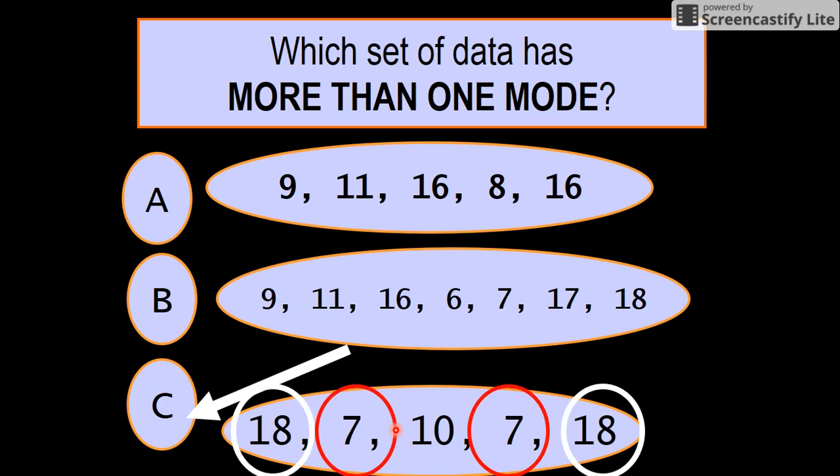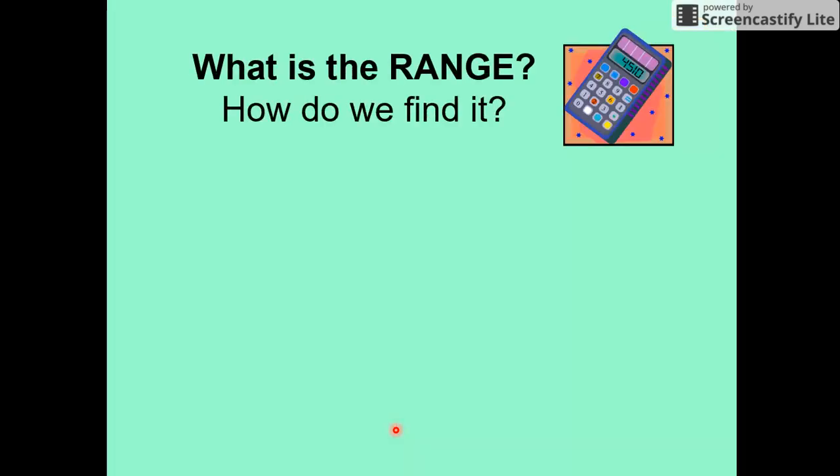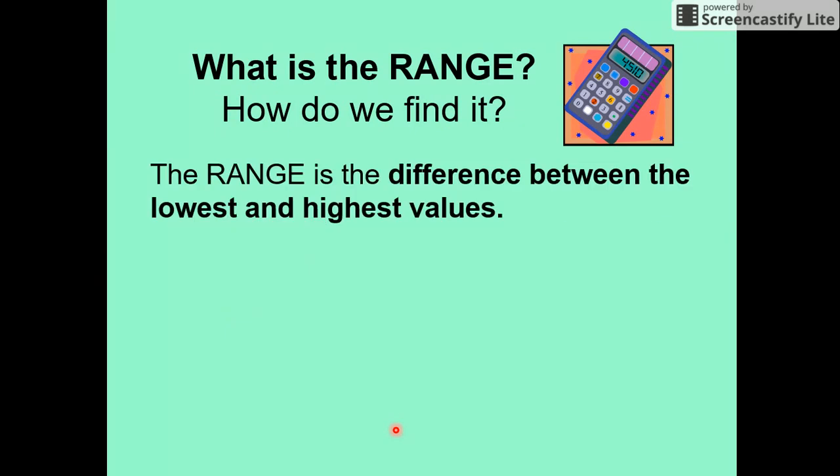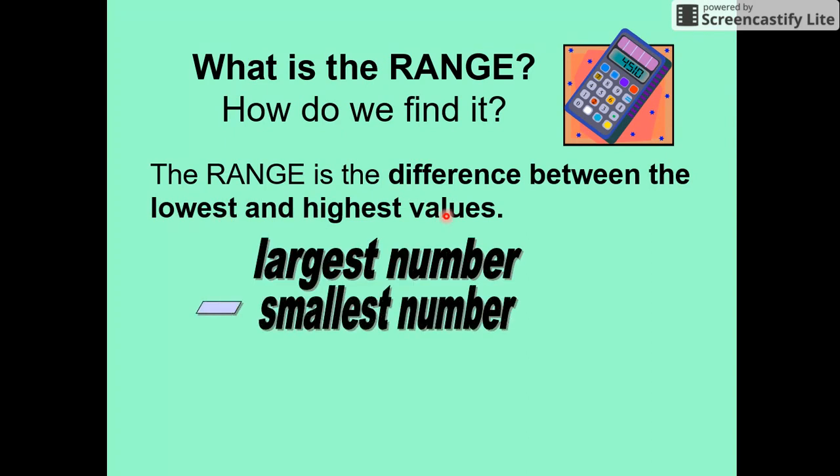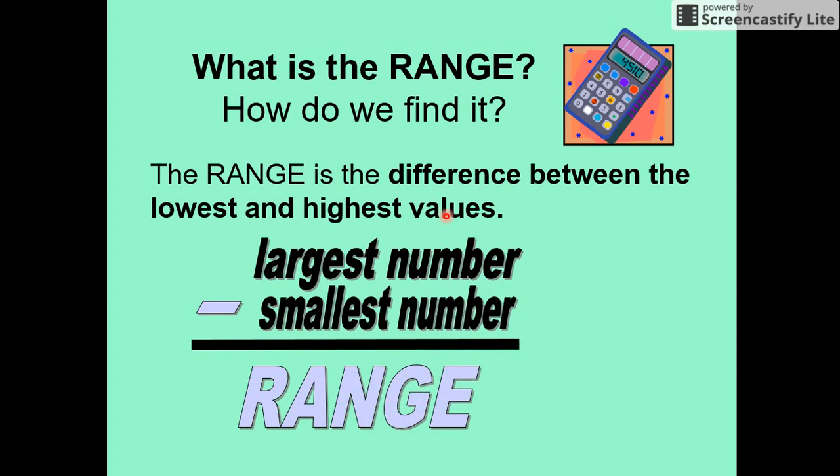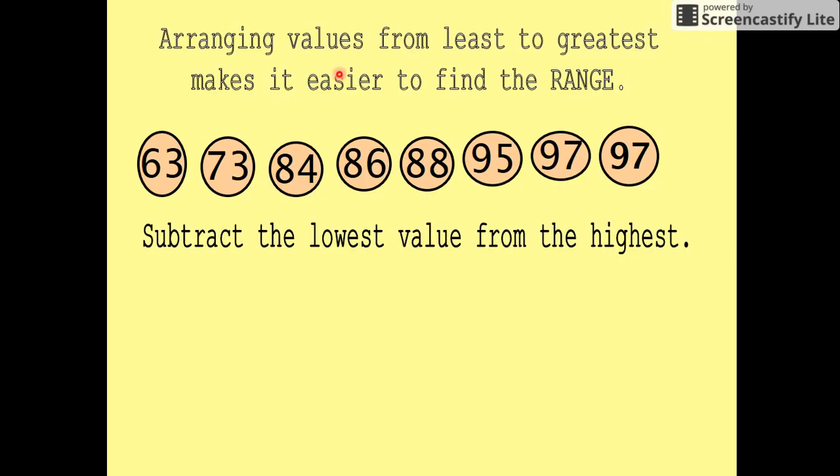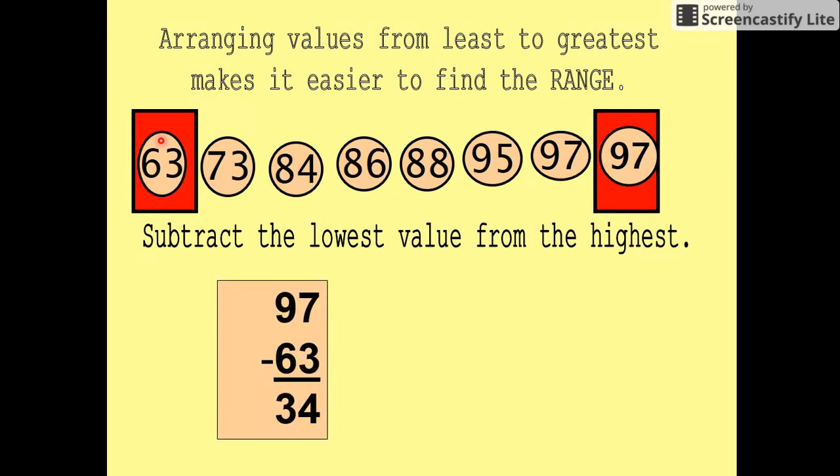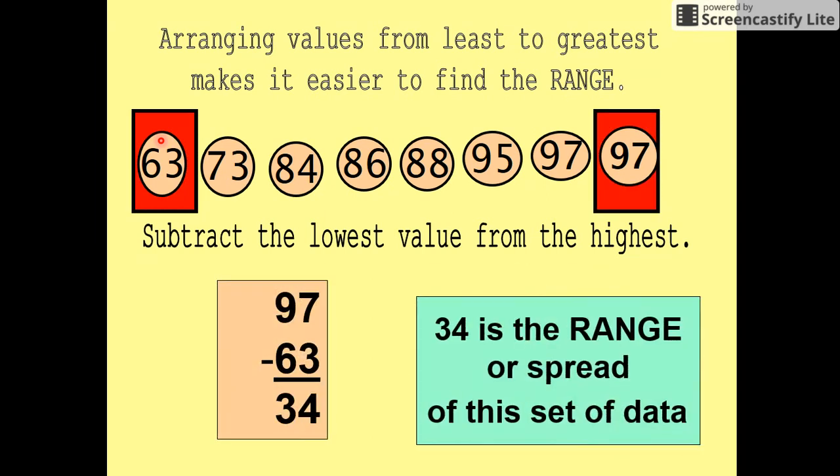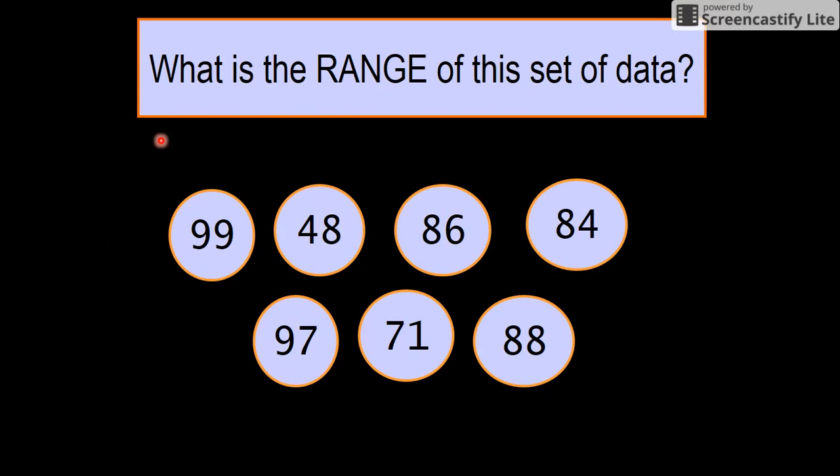Now the range. How do we find a range? The range is the difference between the lowest and the highest values. Largest number take away your smallest number gives you the range. So arrange the values from least to greatest—makes it easier. Subtract the lowest value from the highest. You're going to go 97 take away 63: 34. 34 is your range or the spread of the set of data.